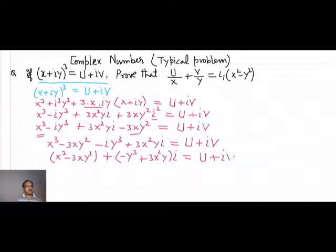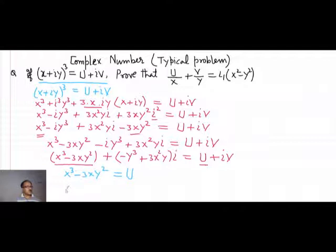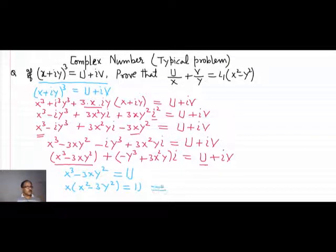Now we compare the real part on both sides. Comparing real parts gives x³ minus 3xy² equals u. Taking x common from the left side: x(x² minus 3y²) = u, or equivalently x² minus 3y² = u/x.